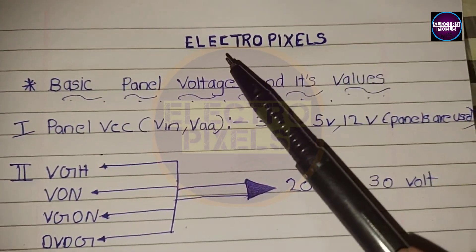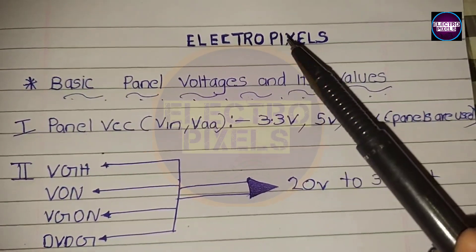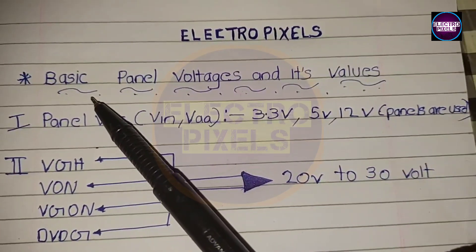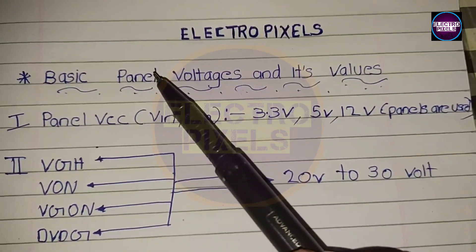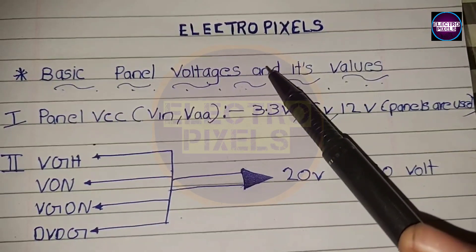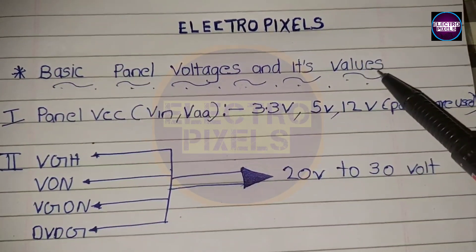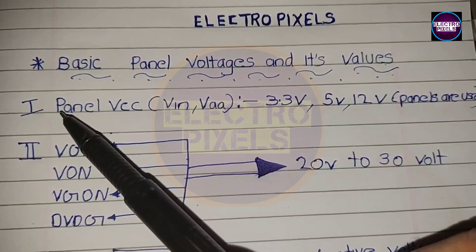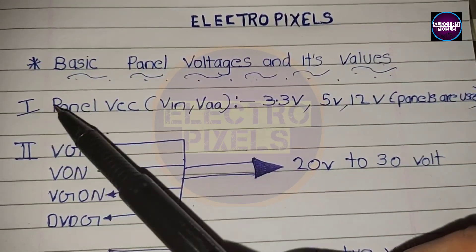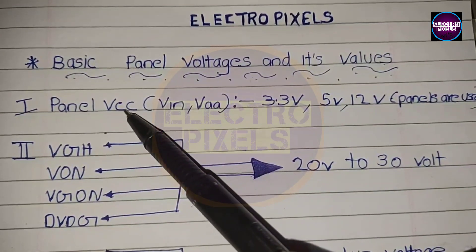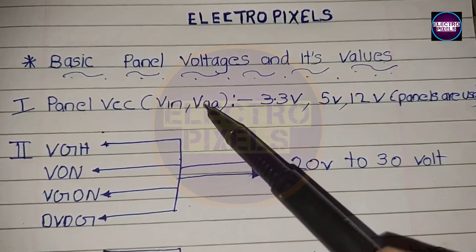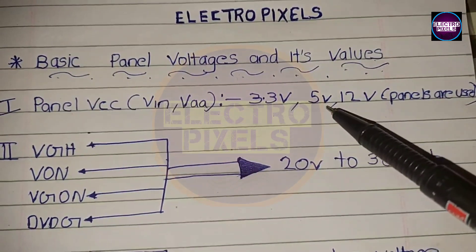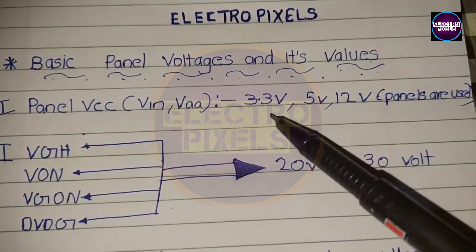Today in this video we are going to discuss about the basic important LED LCD TV panel voltages and its values. The first one is the panel VCC, also called as VIN, VAA, etc. These are the panel input voltages. Mainly 3 voltages are used: panel VCC 3.3V, 5V, and 12V. The 12V panel is mostly used in TVs, while the 5V and 3.3V panels are mostly used in mobile, laptops, and monitor displays.